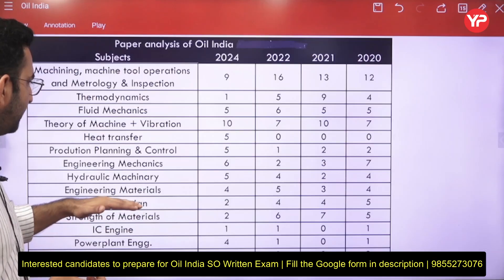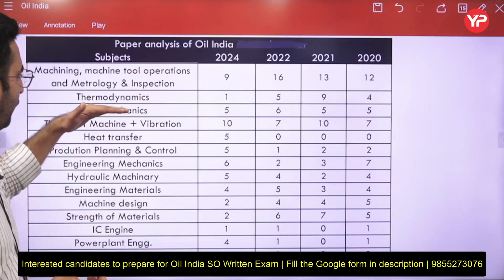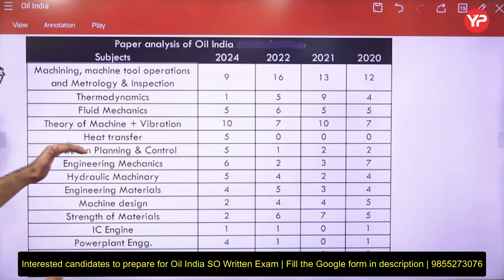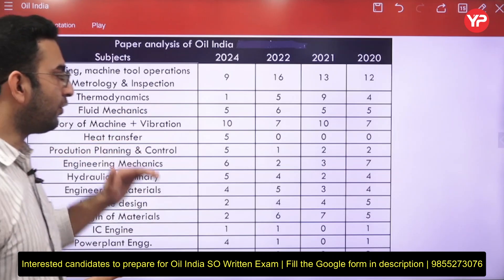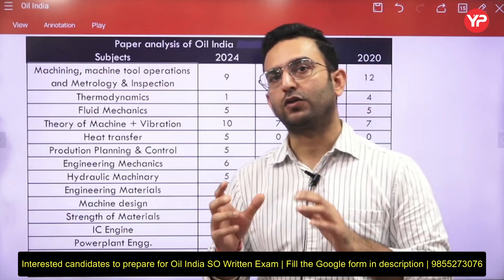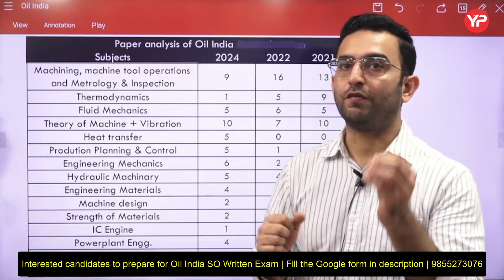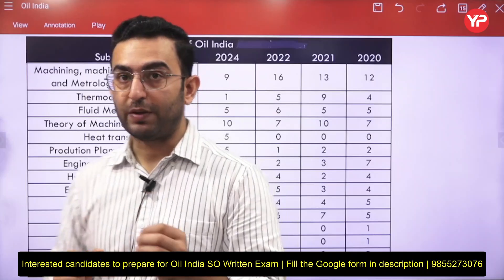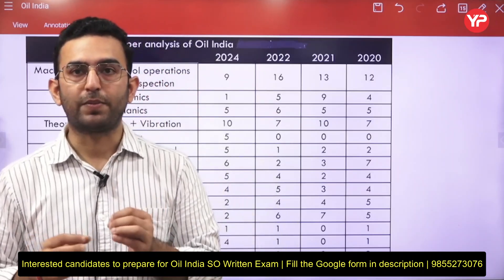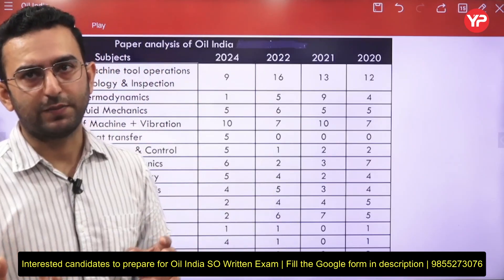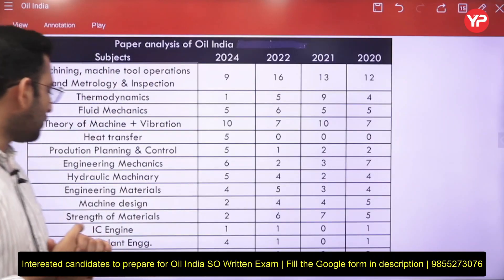For industrial engineering — that is production planning and control — on average three to four questions are asked. The questions are very simple, covering theoretical concepts related to inventory management, scheduling, routing, and dispatching.